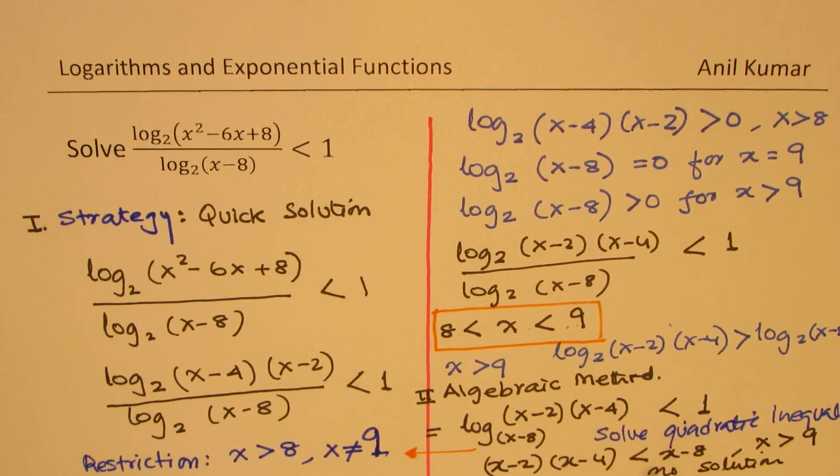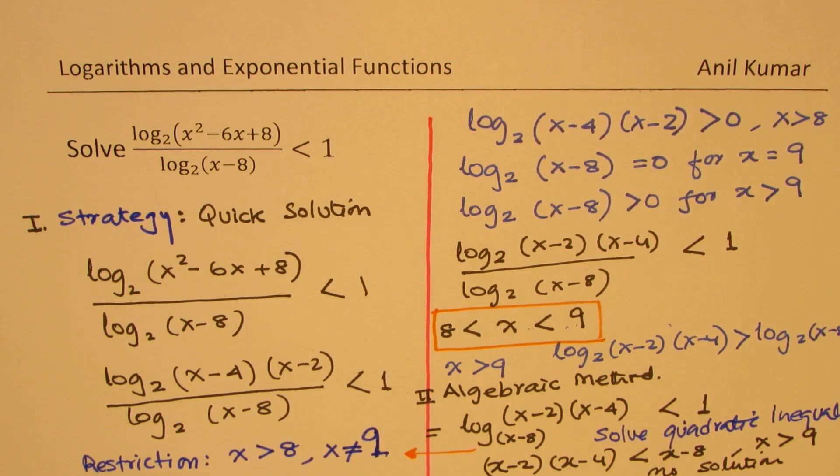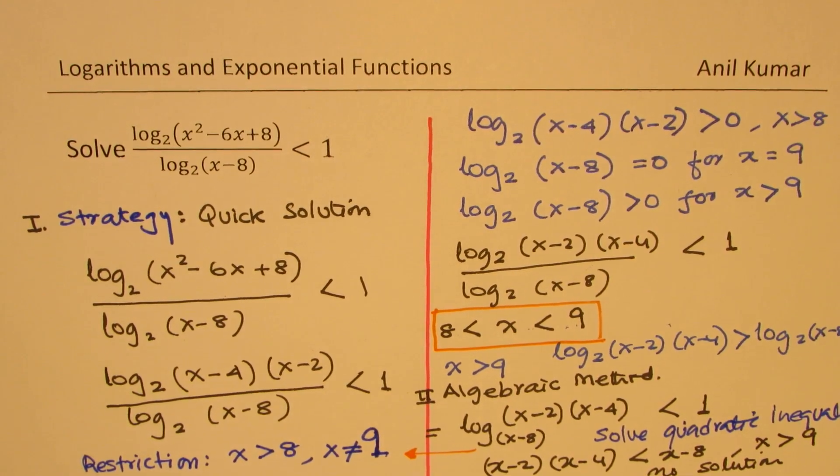And you'll find this has no solution. On the other hand, when you solve this for between 8 to 9, it is true for all the values. And that is all. You get your answer.